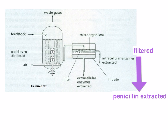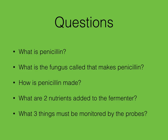The drained mixture is filtered and the microorganisms accumulate at the top of the filter. The filtrate passes through and is then purified, and the penicillin is ready for use and marketing. Review questions: What is penicillin? What is the fungus called that makes penicillin? How is penicillin made? What are two nutrients added to the fermenter? And what three things must be monitored by the probes?